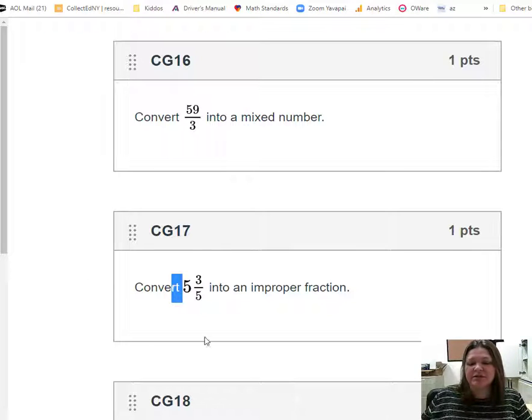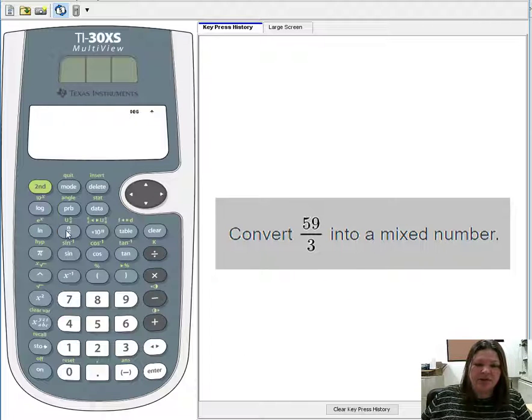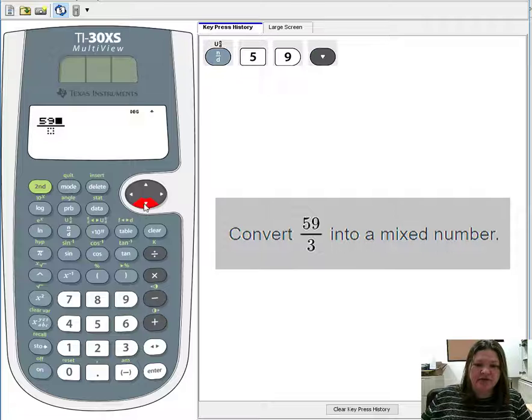For example, 5 and 3/5 is a mixed number. So that's the form I'm looking for. So let's get back. So I'm going to put in 59/3 first. I'll press the n/d button. Type 59 on the top, arrow down to the 3.